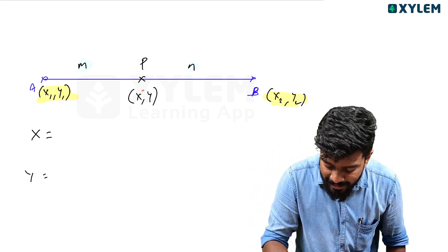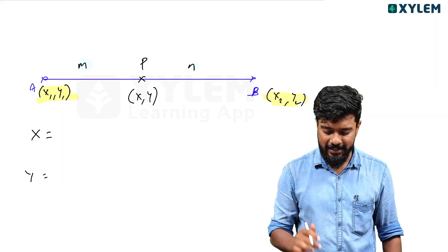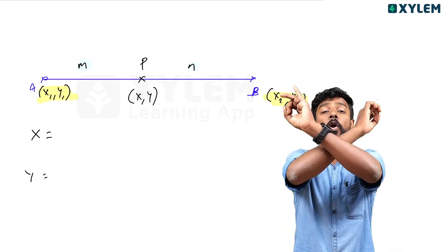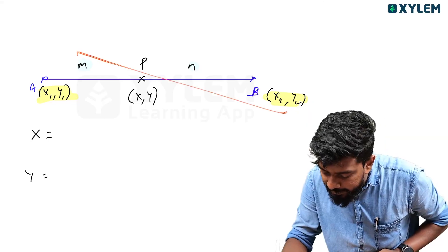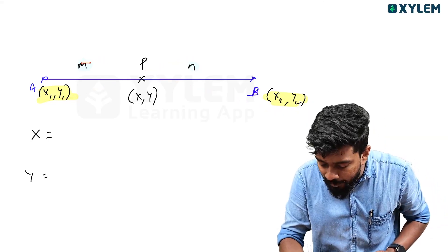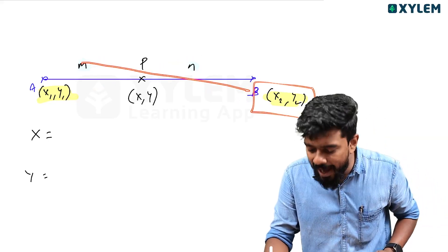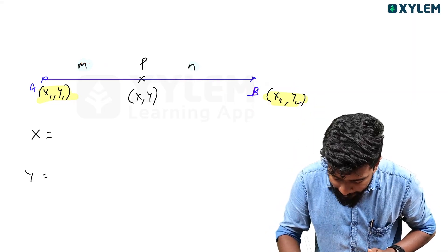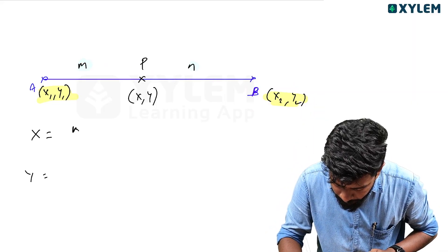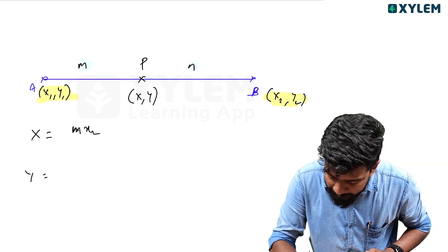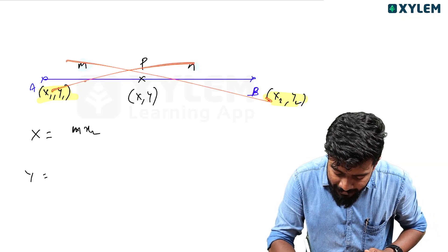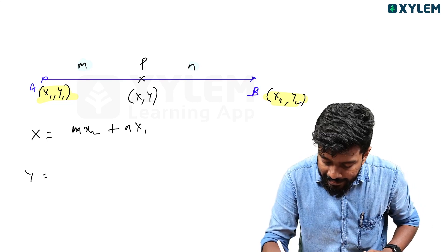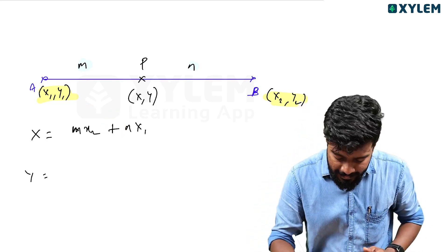To find the x-coordinate of P, we use cross multiplication. Point A has coordinates (x1, y1) and point B has coordinates (x2, y2), and the ratio is M:N. The x-coordinate of P is: (M × x2 + N × x1) divided by (M + N).